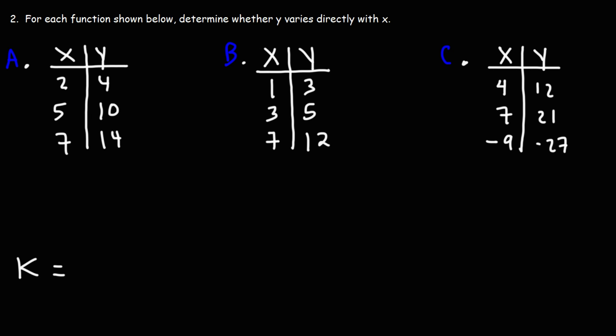For every pair of X and Y values, K has to be the same. So remember, K is Y divided by X. So if we take the Y value and divide it by the X value, what do we get? 4 divided by 2 will give us K. So 4 divided by 2, we know it's 2. 10 divided by 5 is 2. 14 divided by 7 is 2.